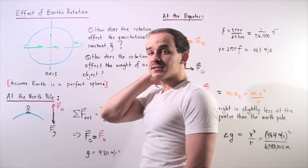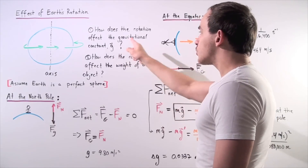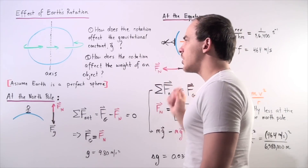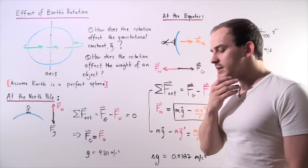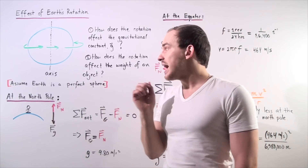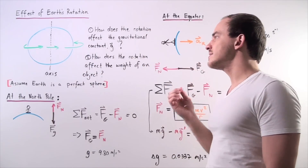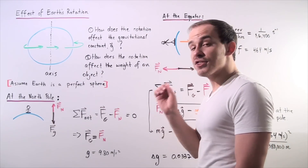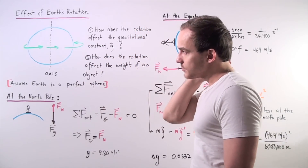Now we want to ask and answer the following two questions: How does the rotation of the Earth affect the gravitational constant g, and how does the rotation of the Earth affect the weight of an object? Let's begin by making the assumption that the Earth is a perfect sphere, which basically implies that the radius at any given point is exactly the same — equal to 6,380,000 meters — so we have no bulging at the equators.